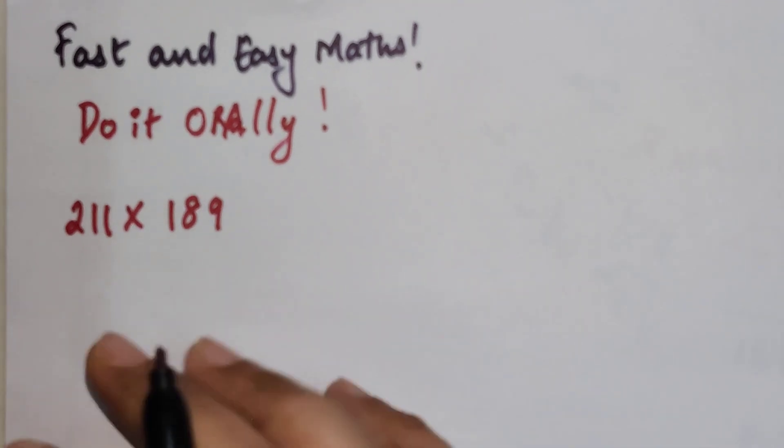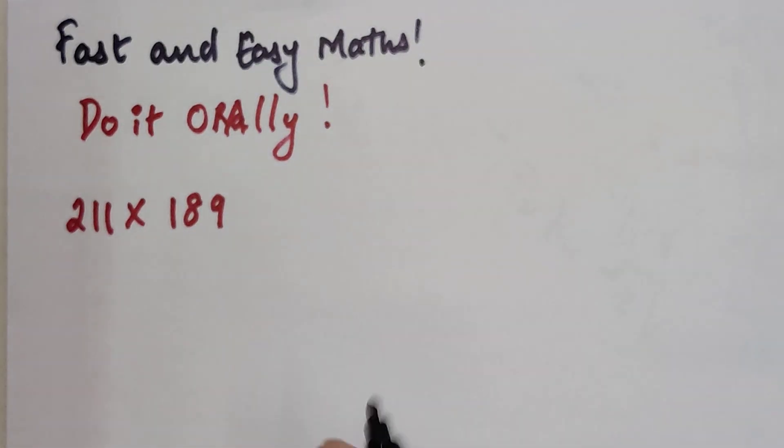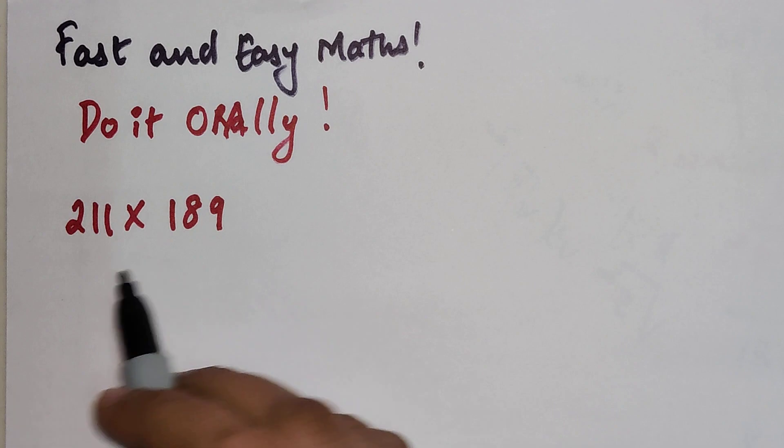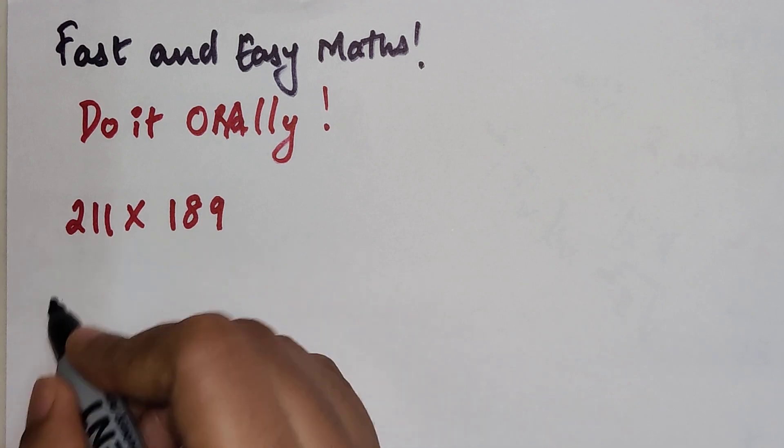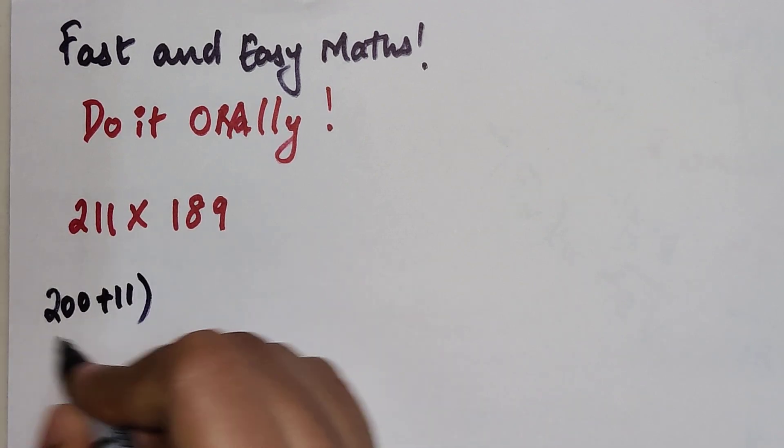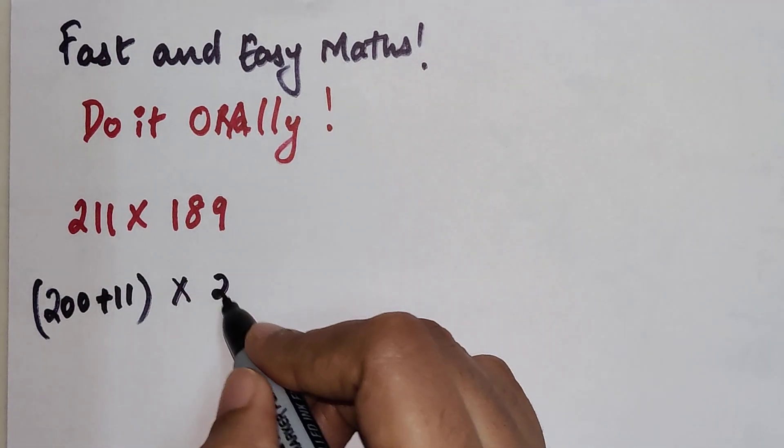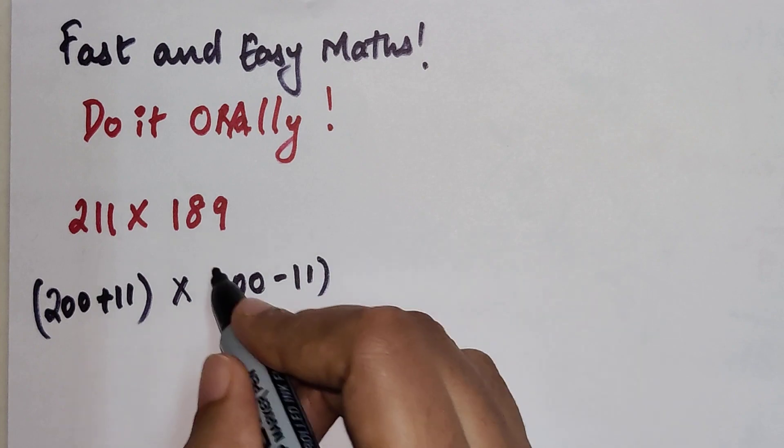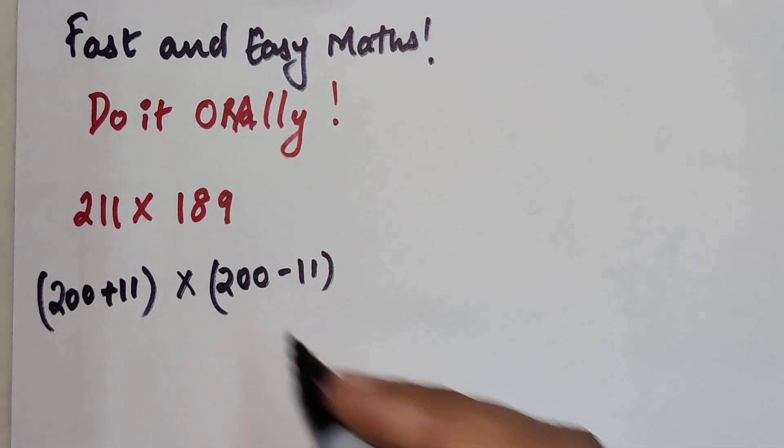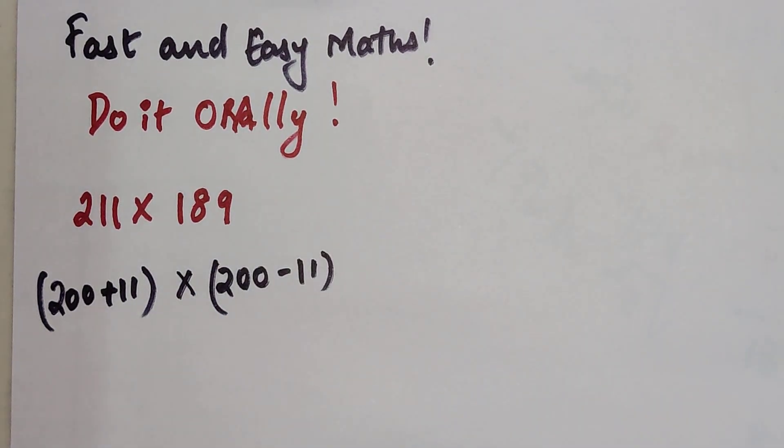All you have to do is see whether there is a common number in between the two numbers. So basically I can say that 200 plus 11 will get me 211 and 200 minus 11 will get me 189.